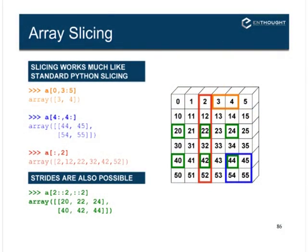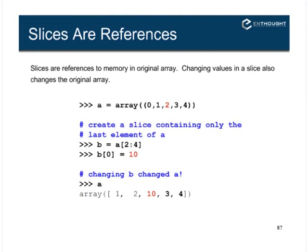You can use stride operations on multi-dimensional arrays too. Here: start on index-2 row, go to the end of rows, skip every other row; on columns, start at the beginning, go to the end, every other item. So we've specified starting at a particular row, pulling out rows with a stride, and all columns with a stride.